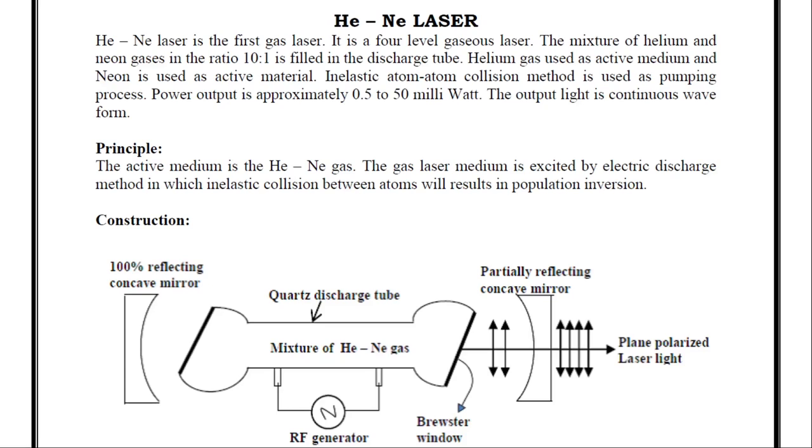Dear students, in this lecture we will study helium-neon laser. Helium-neon laser is the first gas laser which was developed. It is a four-level gaseous laser as compared to ruby laser. Ruby laser was a three-level laser. Helium-neon laser is a four-level laser.